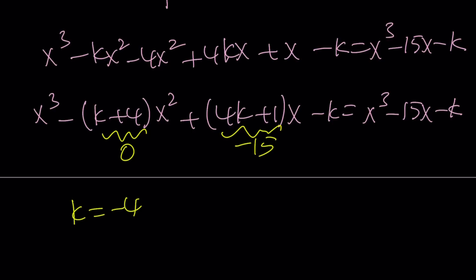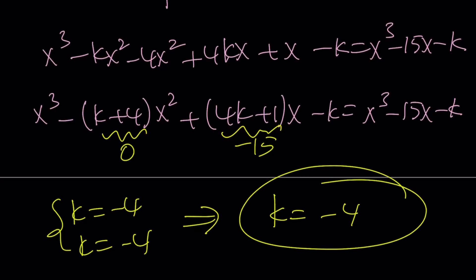k equals negative 4 and k equals negative 4, which means k equals negative 4. And we were looking for k, so the answer is negative 4. And this brings us to the end of this video.